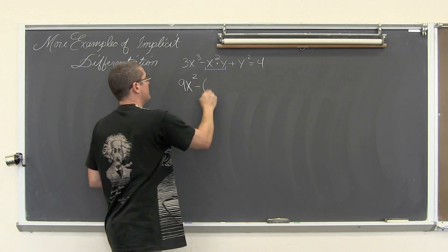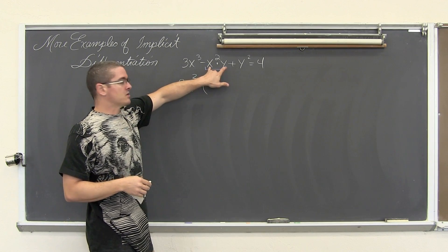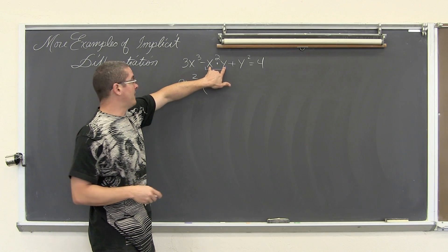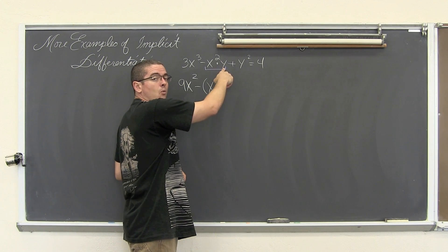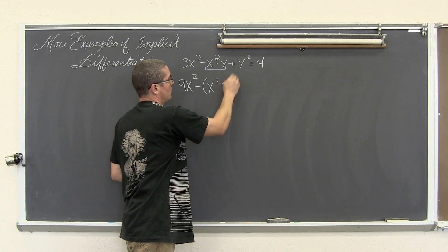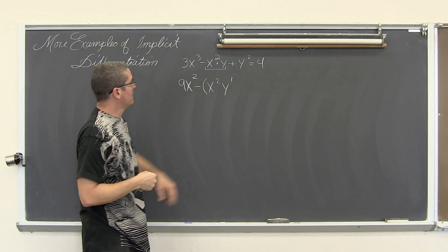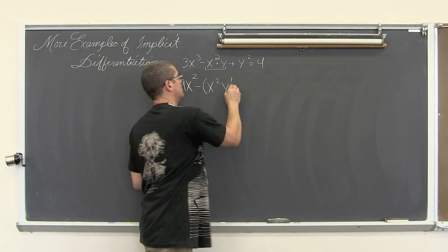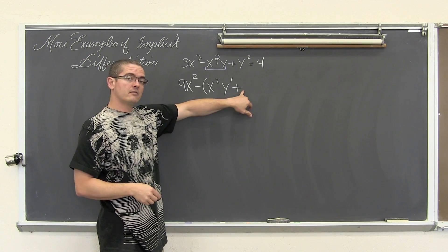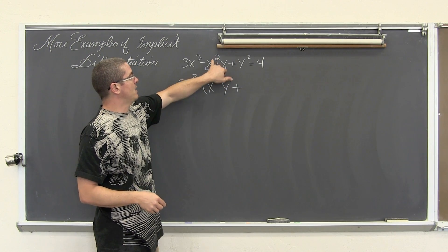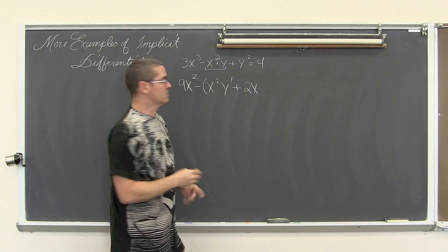I am going to use a little less notation than in my past videos. The first factor times the derivative of the second factor: we have x squared times the derivative of y, which is y prime, or dy over dx. I am using y prime for shorthand notation. Then the first derivative of the second plus the derivative of the first — so the derivative of x squared is 2x times the second factor, y.